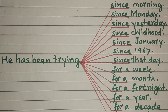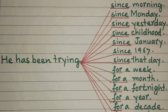Since ka istemal point of time ke liye — yaani pukka samay bataane ke liye — kiya jaata hai. Aur 'for' ka istemal duration ke liye — yaani period of time ke liye — arsa zaahir karne ke liye, waqt ki muddat bataane ke liye kiya jaata hai.